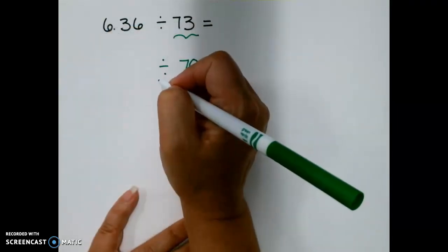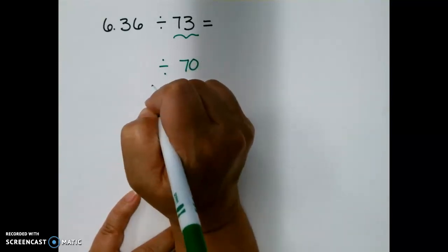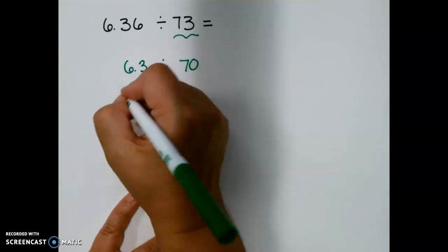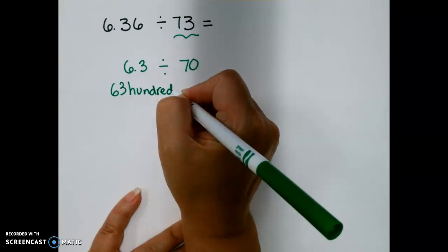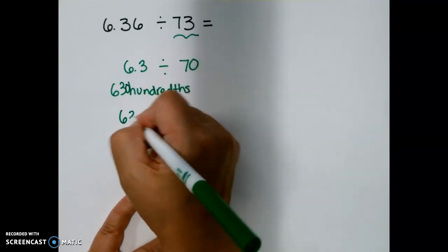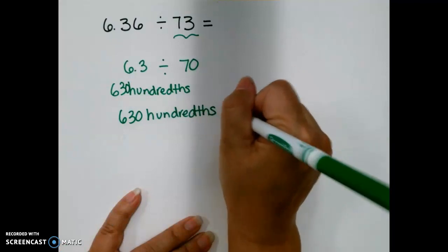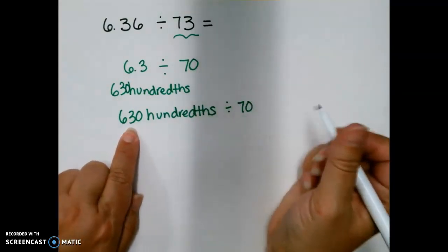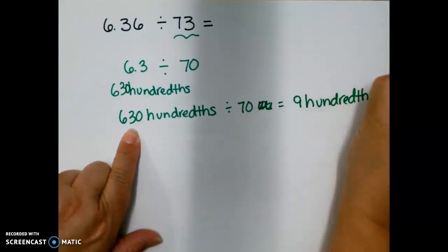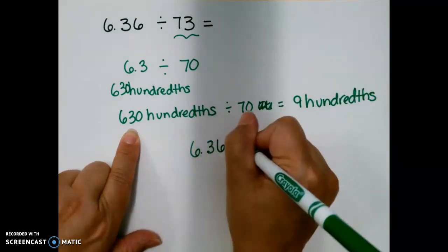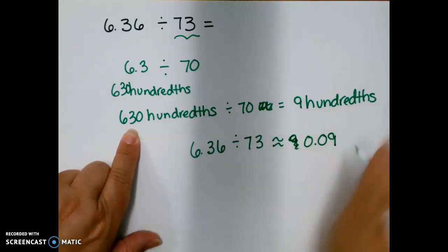And I can say 630 hundredths divided by 70. Because that's what 6.3 is equal to. And if I divide 630 hundredths by 70, that's going to equal 9 hundredths. So 6.36 divided by 73 is about 9 hundredths. So make sure you're writing these down with me. The next one gets a little trickier.